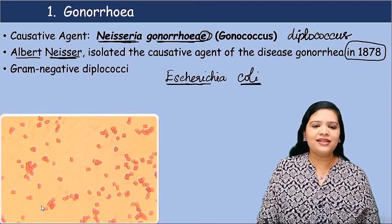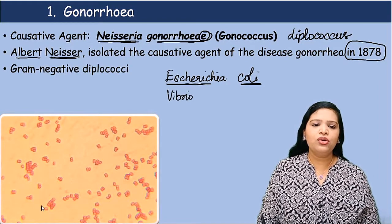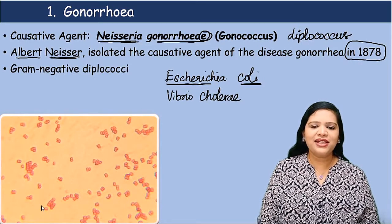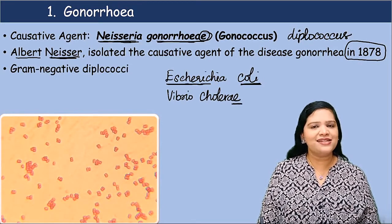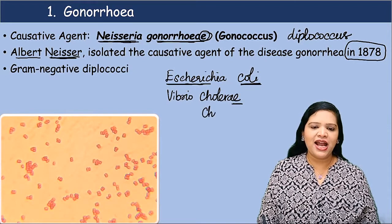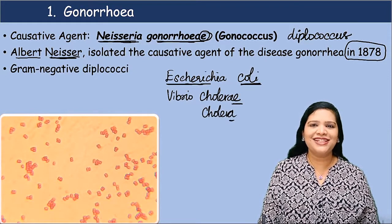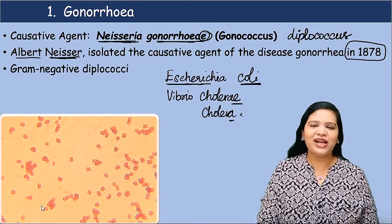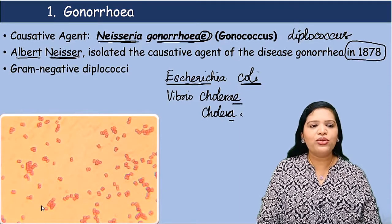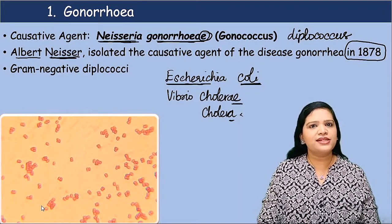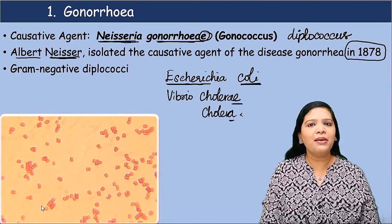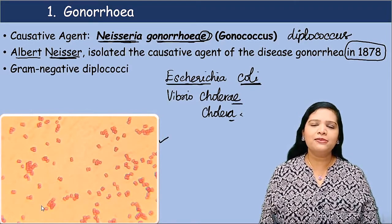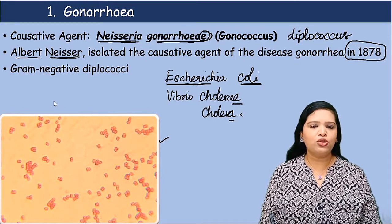Let us see another example: Vibrio cholerae. Here, cholerae is the name of the bacteria and the name of the disease is cholera — there is no E here. These are some interesting things while naming organisms. So Neisseria gonorrhoeae is the causative agent for the disease. This is a gram negative diplococci. Look at this picture — this is a gram staining picture which beautifully shows these diplococci.